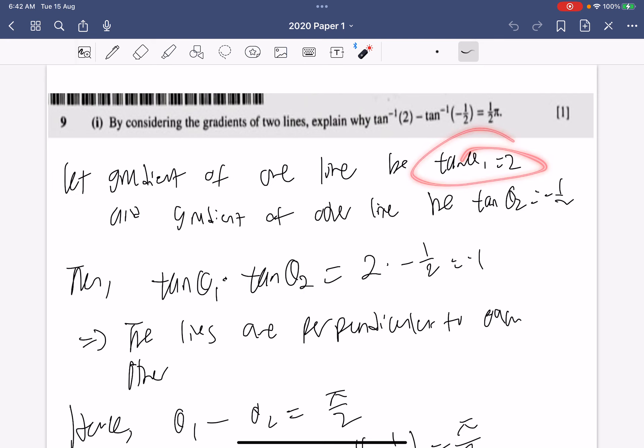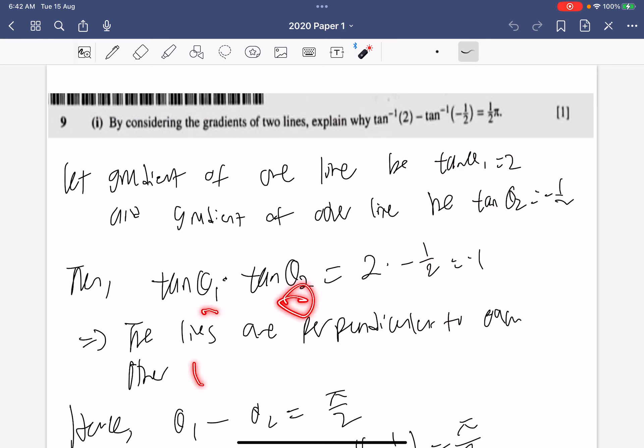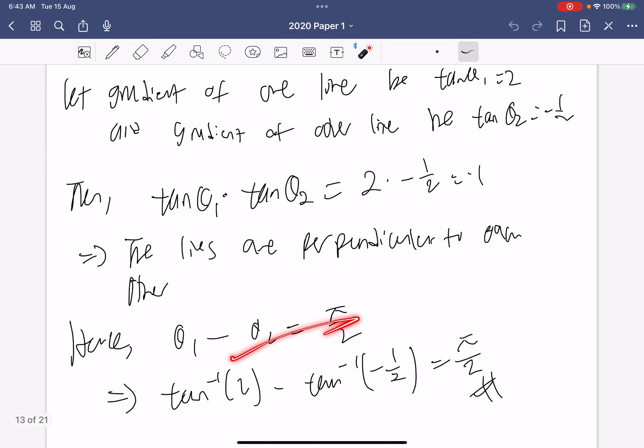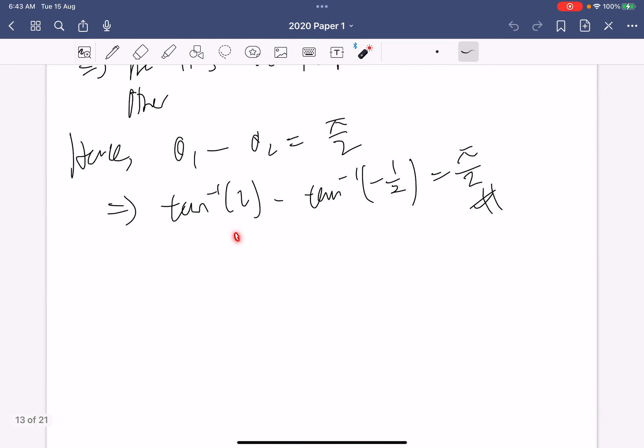So we just let a gradient for one of the lines be, so when you have gradient of a line you just draw a line and then your xy plane, it is actually the angle it makes with the positive x-axis. So tangent theta 1 is 2 and then your gradient of the other line is tangent theta 2 which is minus half. Well we know that tangent theta 1 times tangent theta 2 equals to minus 1, so these two lines are perpendicular to each other. Then because the lines are perpendicular, that means theta 1 minus theta 2 equals to pi over 2. And theta 1 is just inverse tangent of 2 and theta 2 is inverse tangent of minus half. So that's why tangent inverse 2 minus tangent inverse minus half is pi over 2.